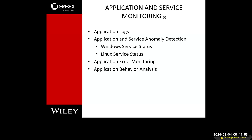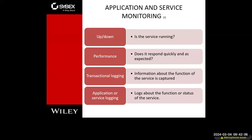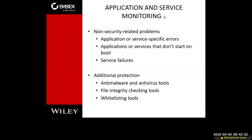Application behavior analysis: run a baseline and understand how the application is supposed to run versus if it is having any issues. Application and service monitoring can be up-down monitoring, performance, transactional, or general application logging. If the application is set up with a robust logging service, you can go through almost every step of the application and find out what's going on if something goes off the rails. Non-security-related problems could be around performance, specific errors, or services that don't start on boot or don't close down when expected.